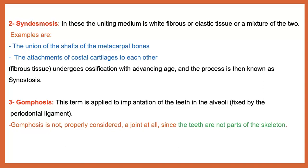Gomphosis refers to the implantation of teeth inside the alveoli of the maxillary bone or the mandible, by a ligament called the periodontal ligament. It is important to understand that gomphosis is not considered a true joint because teeth are not part of the skeleton.